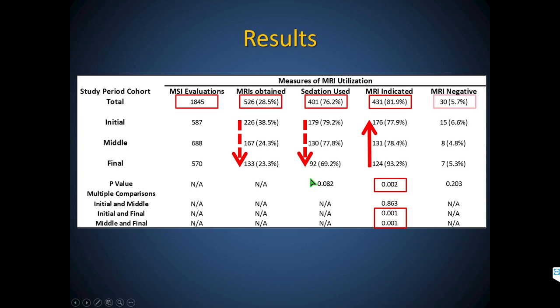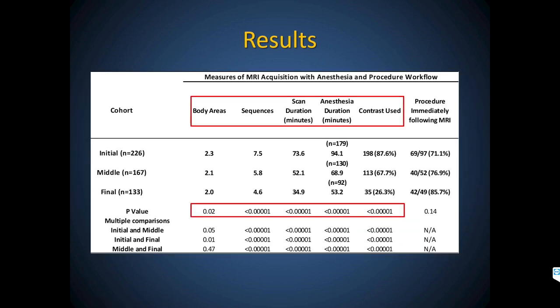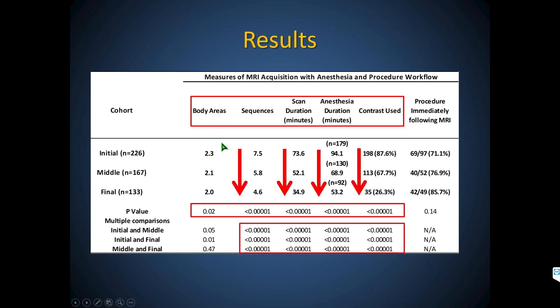We reduced sedation use as we got more efficient and shortened scan duration. We do see negative MRIs — kids who come in looking like musculoskeletal infection with focal physical findings, impressive laboratory elevations, and fever — and almost all those negative scans were indicated studies. The real magic was reducing the number of body areas scanned, sequences per scan, scan duration, anesthesia duration, and ultimately the percentage of contrast being used.